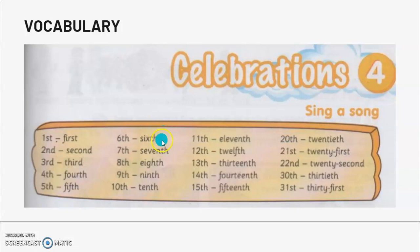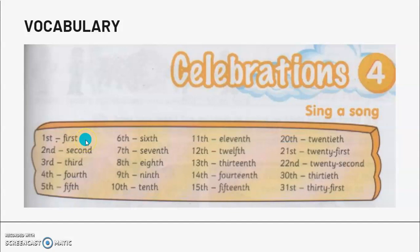Okay, so if you notice, the first, second, and third here — the letters at the end are different. For example, first ends in ST, second ends in ND, third ends in RD. But the rest of the numbers, the letters at the end are all TH.